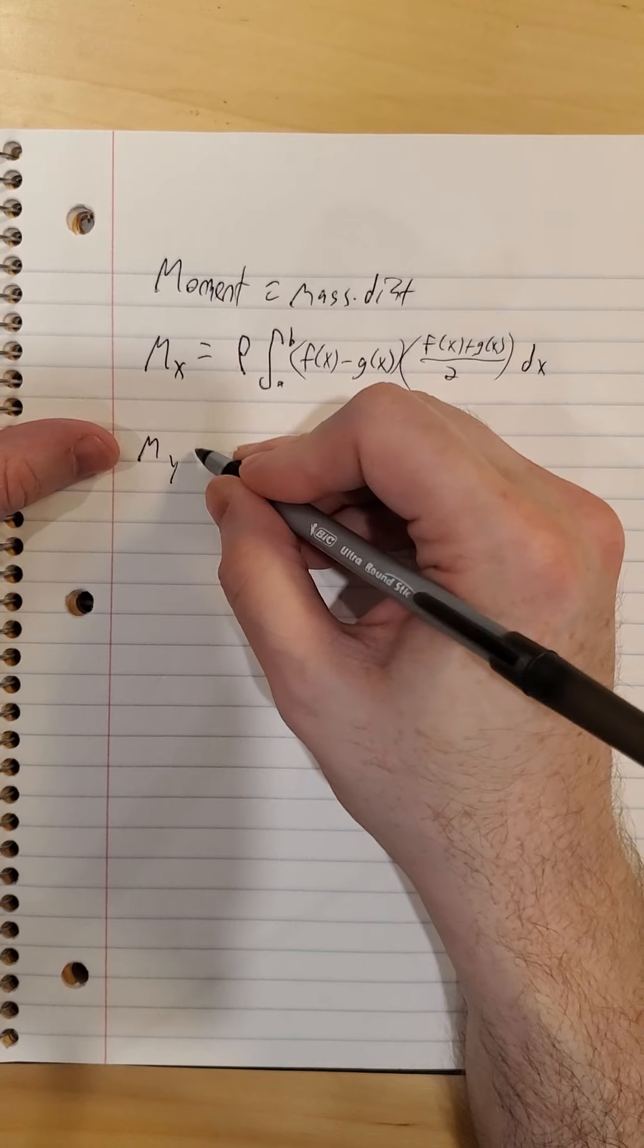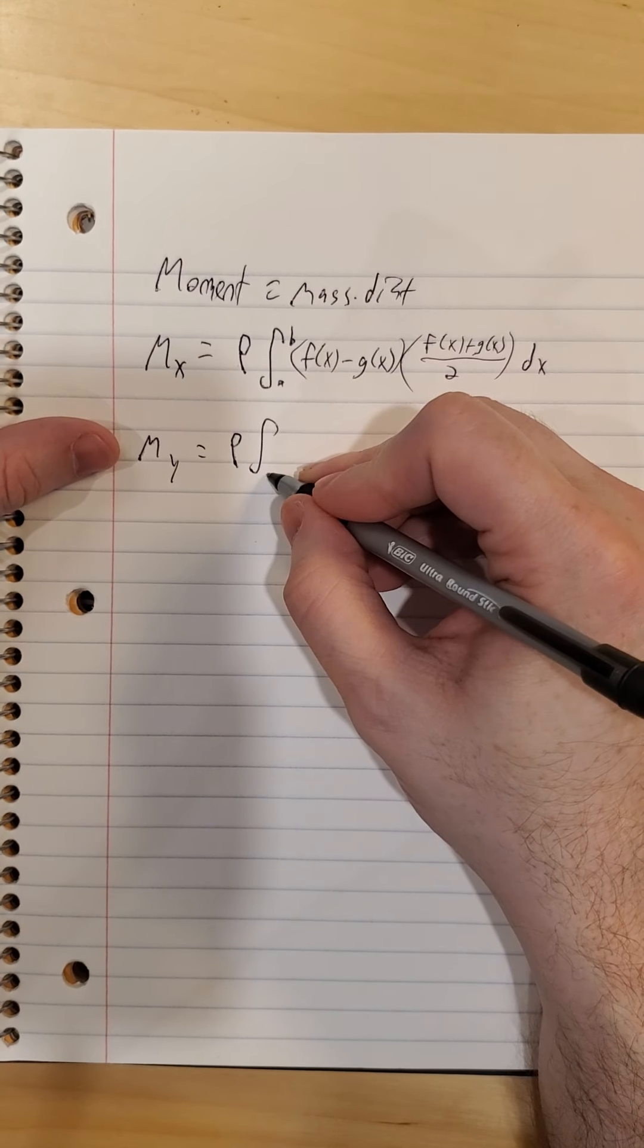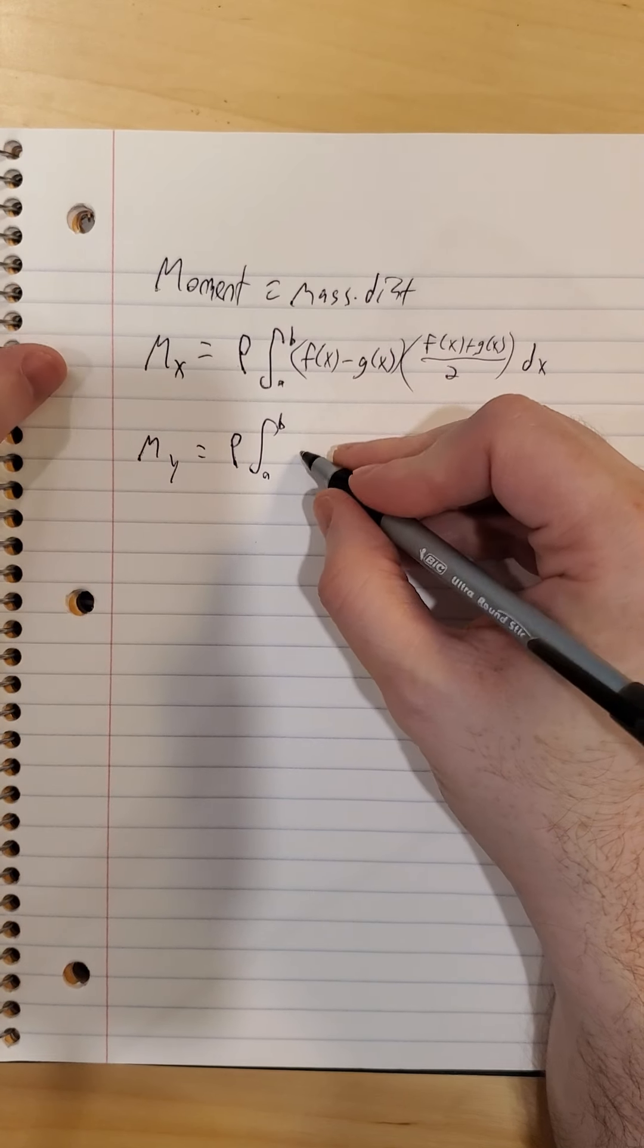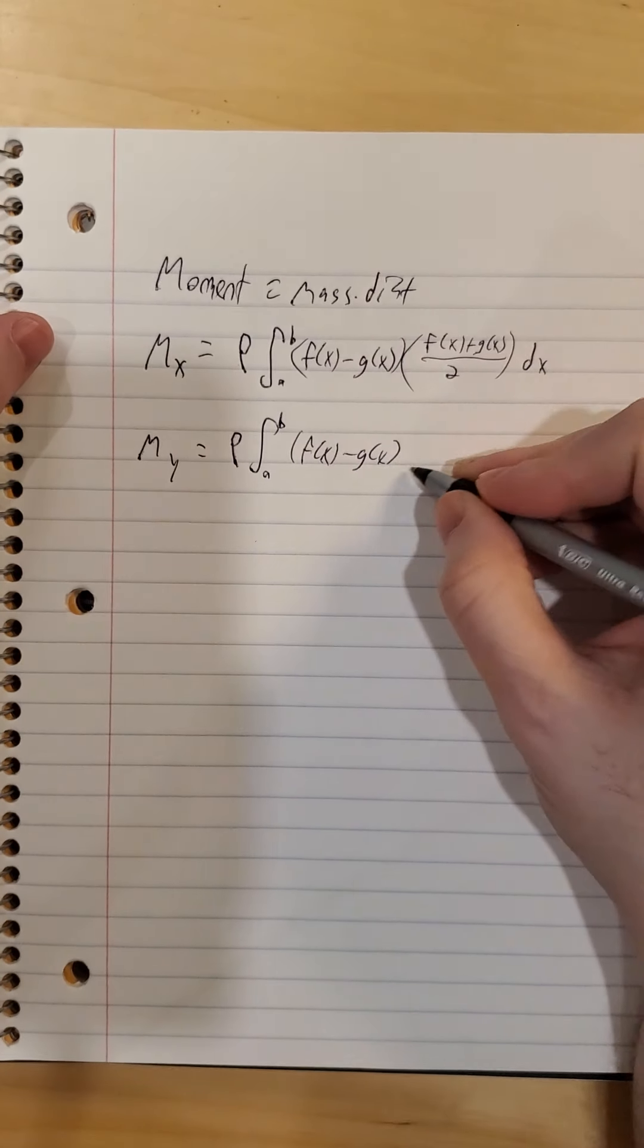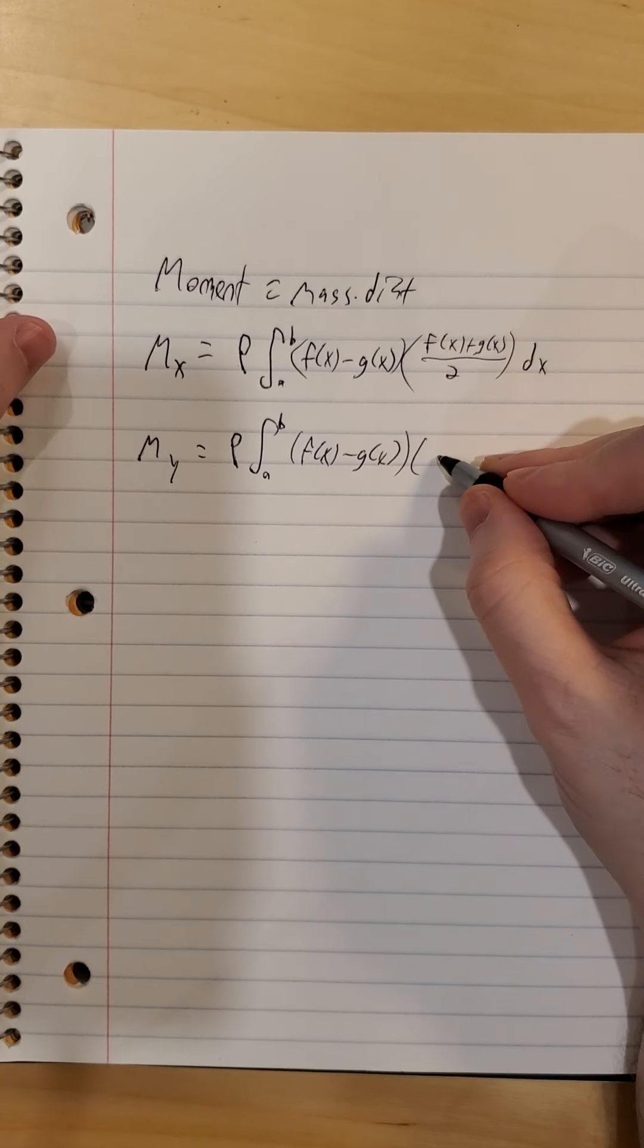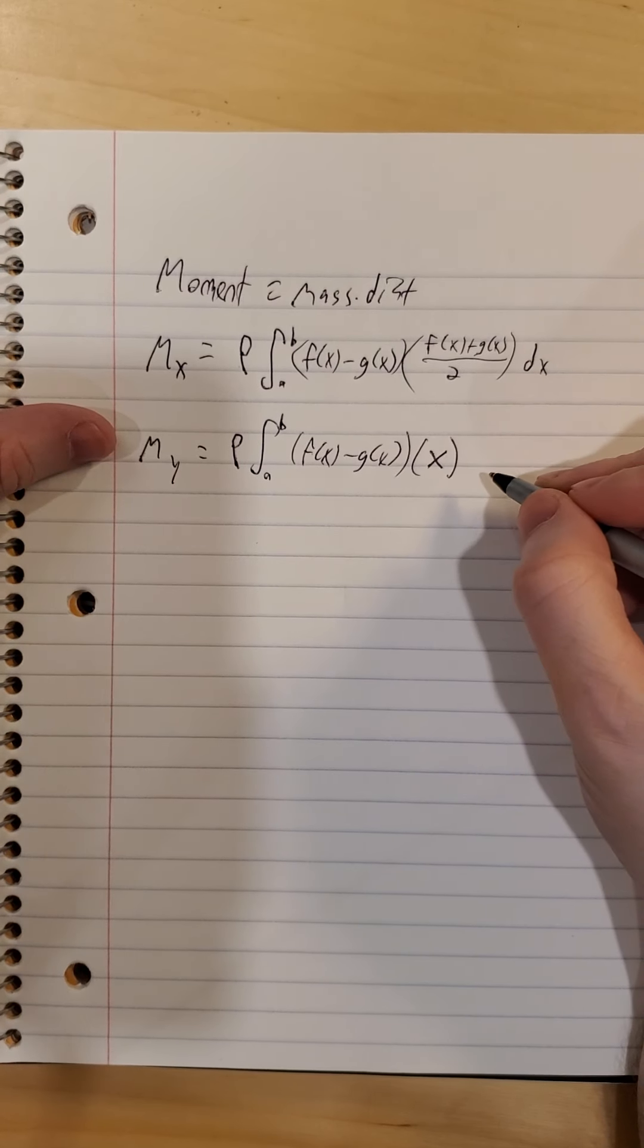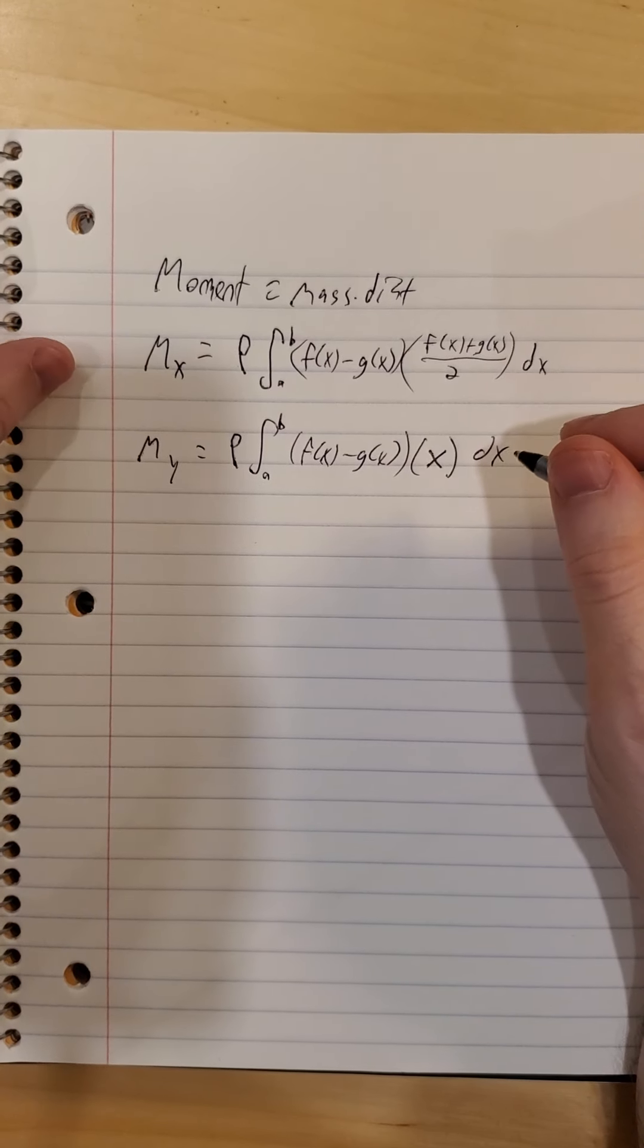Our moment with respect to the y-axis. Mass, again, same as before, integral from a to b, density, uniform density, rho, f of x minus g of x. And our distance from the y-axis is whatever value we plug in for x. And of course we multiply by dx.